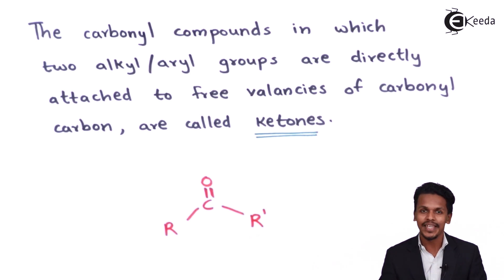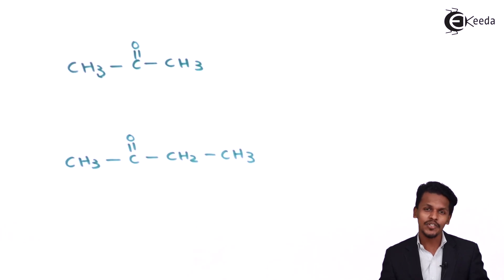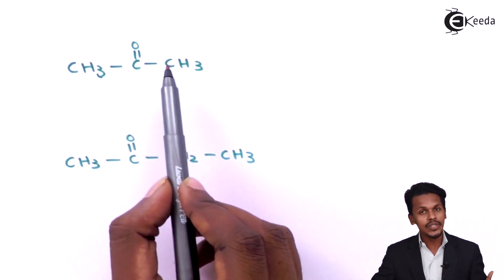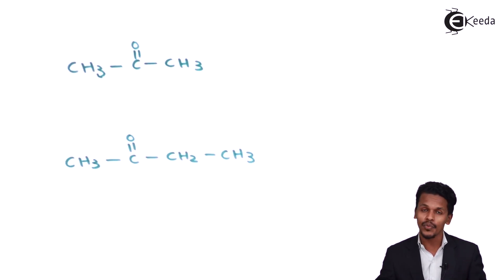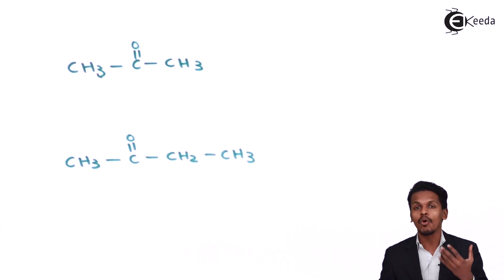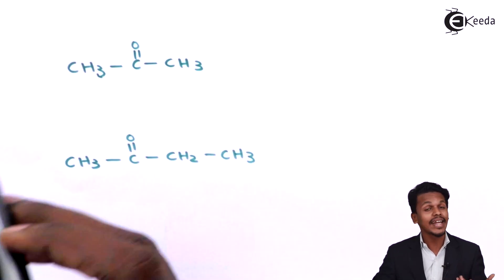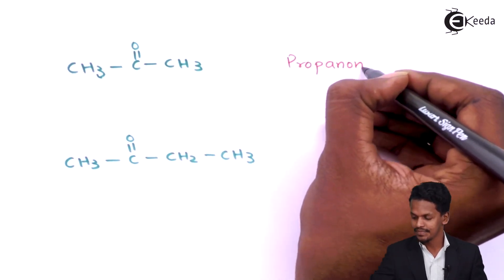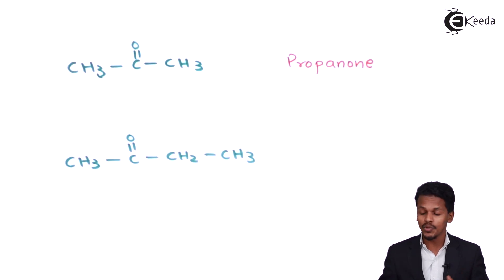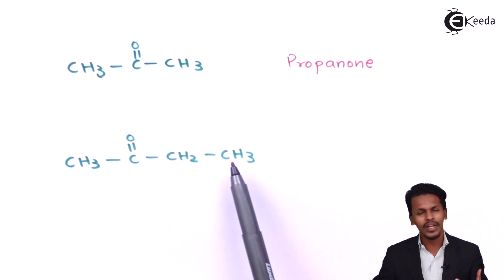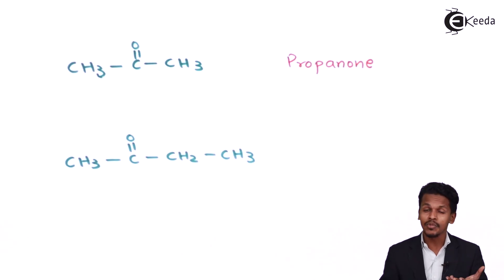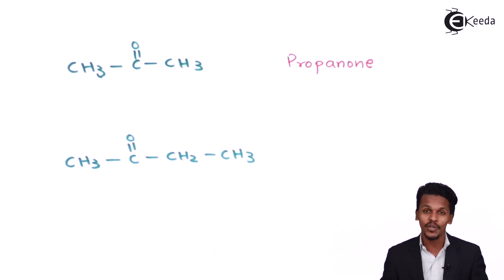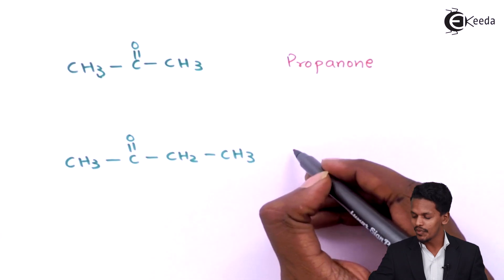Now let me discuss a few examples of ketones. The first example consists of three carbon atoms — in terms of an alkane it would be propane, but since this is a ketone, the name is propanone. The second example has four carbon atoms — as an alkane it would be butane, but since this is a ketone, the name is butanone.